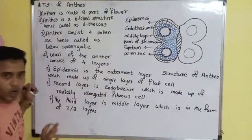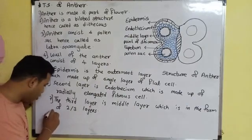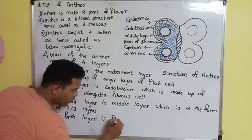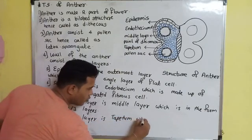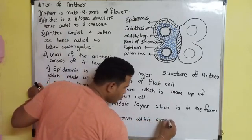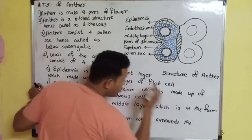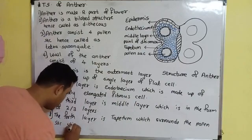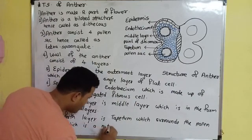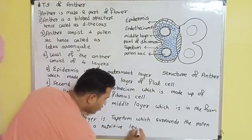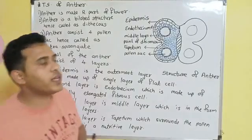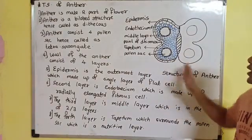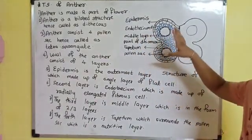The fourth and last layer is the tapetum, which surrounds the pollen sac. Tapetum is the most nutritive layer. So these are the four different layers of the anther wall.